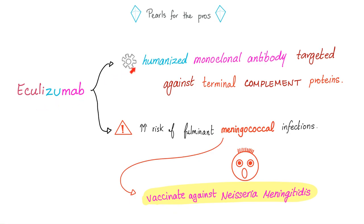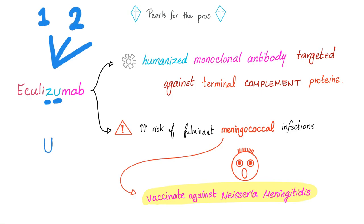Some pearls about eculizumab: the name has the answer. 'Mab' is a monoclonal antibody. 'Zu' means it's humanized. There are three types of monoclonal antibodies: humanized (contains 'zu'), human (contains 'u' without 'z'), and chimeric (contains 'xi') — such as the famous rituximab. So eculizumab is a humanized monoclonal antibody against the terminal complement proteins. It's useful for paroxysmal nocturnal hemoglobinuria and atypical HUS because in both conditions complement is hyperactive, destroying everything and leading to the pentad. Acute renal failure is common in atypical HUS.